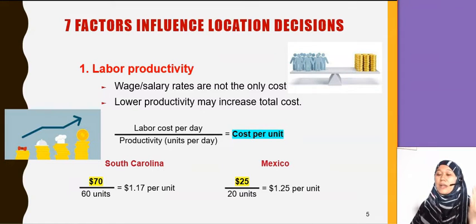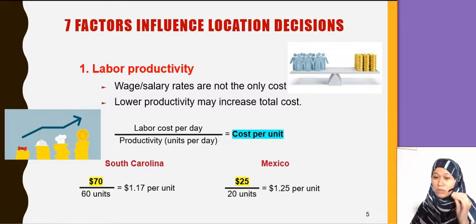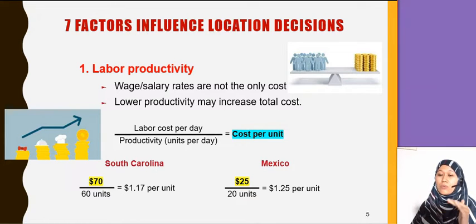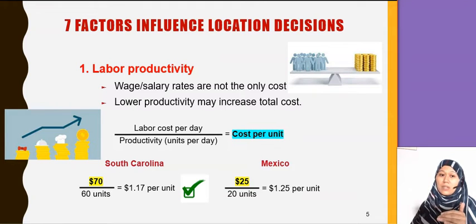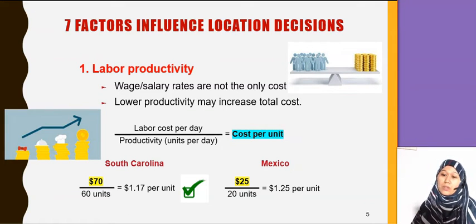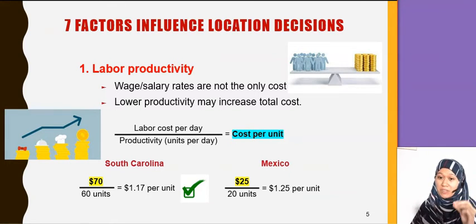They plan to open in Mexico where labour cost is low — $25 per day — but they can only produce 20 units per day. Bila kita calculate balik, it costs about $1.25 per unit. So at the end of the day, South Carolina still has a lower cost compared to Mexico, even though we thought $25 per day is cheap. We need to look at the productivity as well.